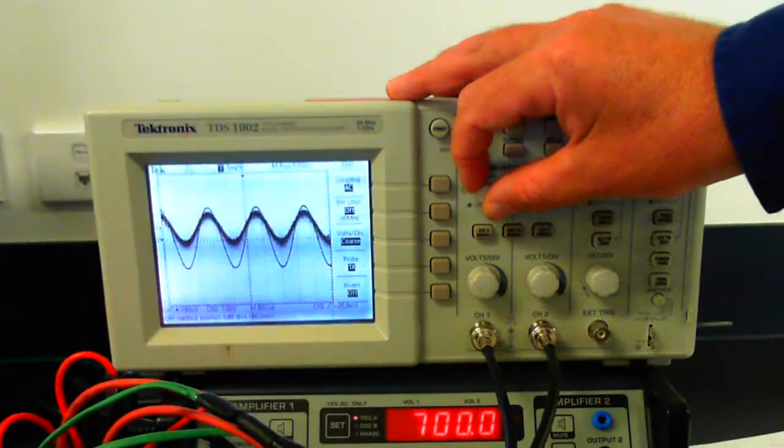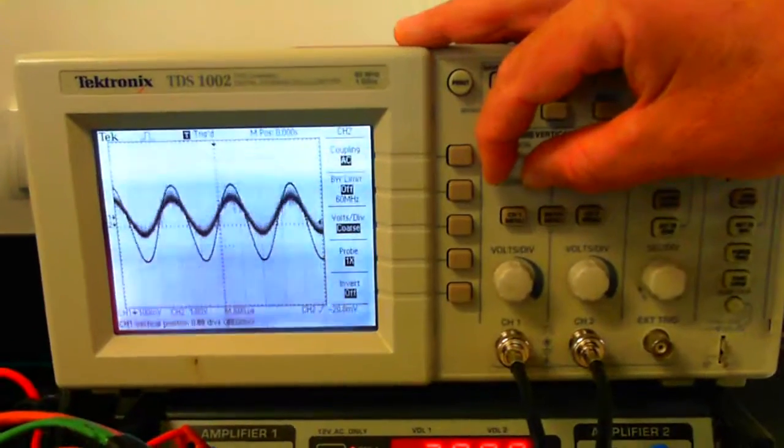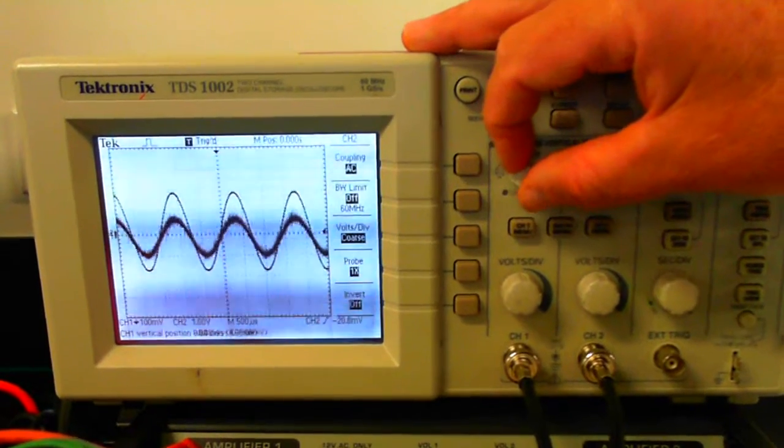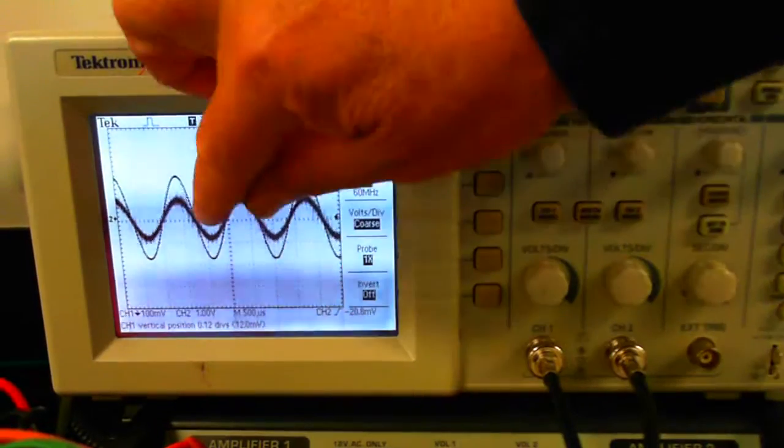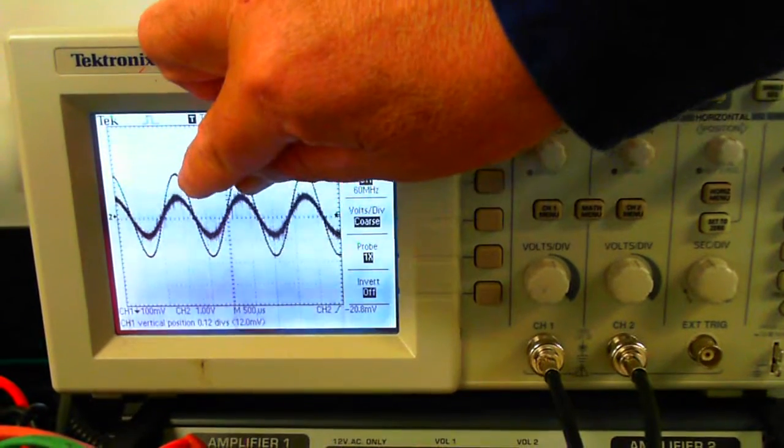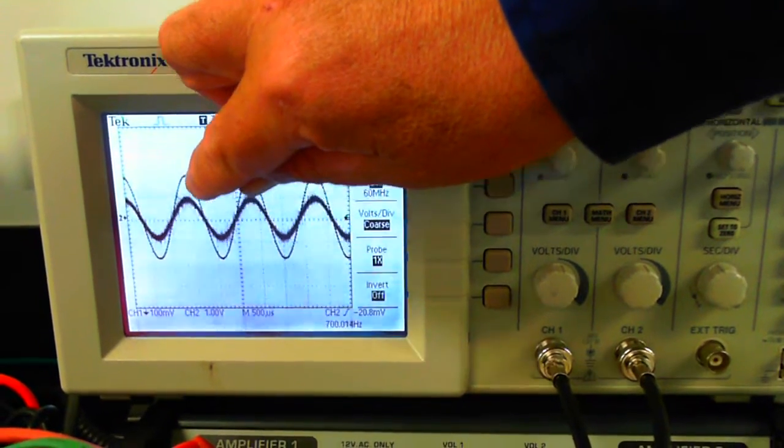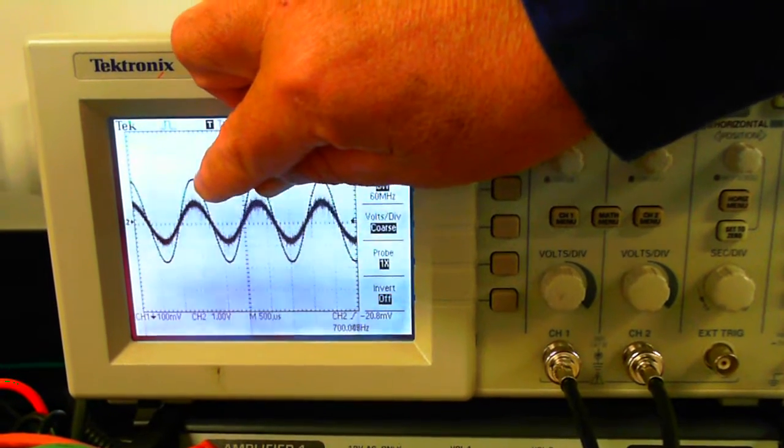Channel 1 shows the current. I'll keep this consistent. I'm moving it up and down on the screen. As you can see, they're in phase. The peak of the current happens at the same time as the peak of the voltage.